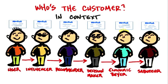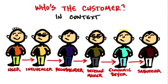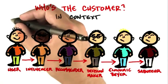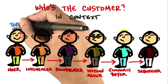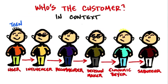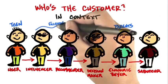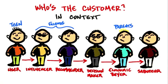Now, if you're thinking, well, I don't sell to businesses, I just sell to consumers, this isn't relevant to me — think of the case of selling entertainment software to teens. The user, well, that's pretty simple, that's the teen. But if they don't have a job, the economic buyer is their parents. The influencers and recommenders may be their friends. And the decision maker, depending on your family, might be mom or dad or the kid or somebody else in between.